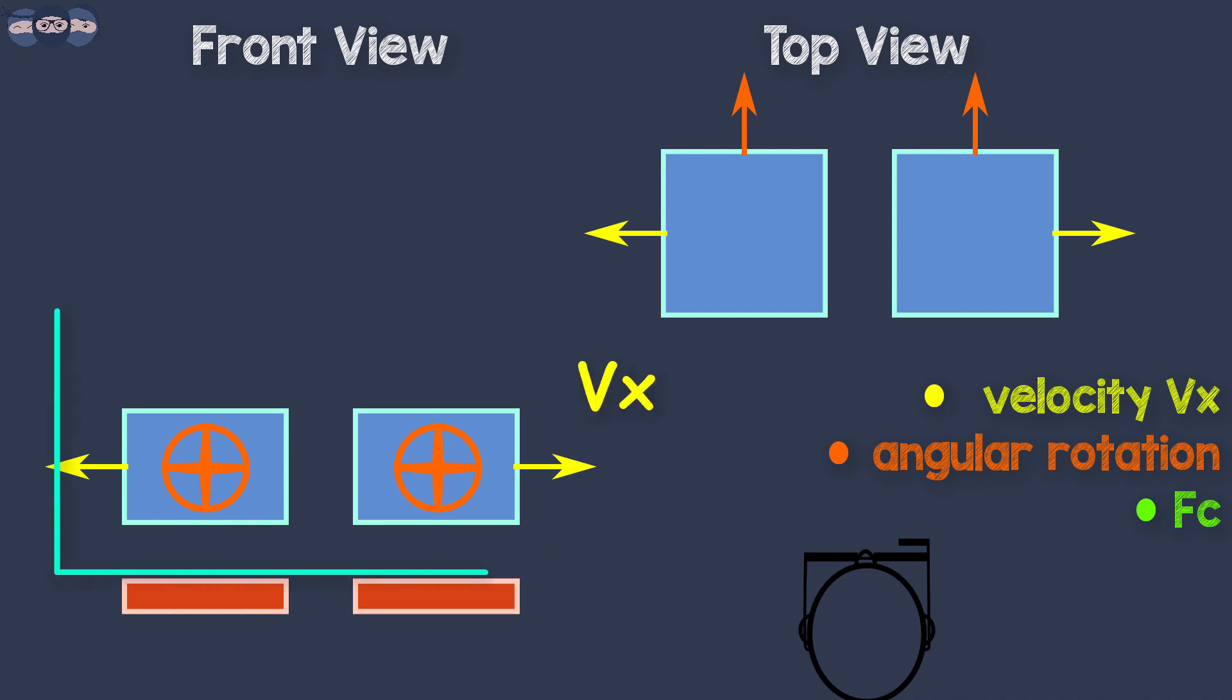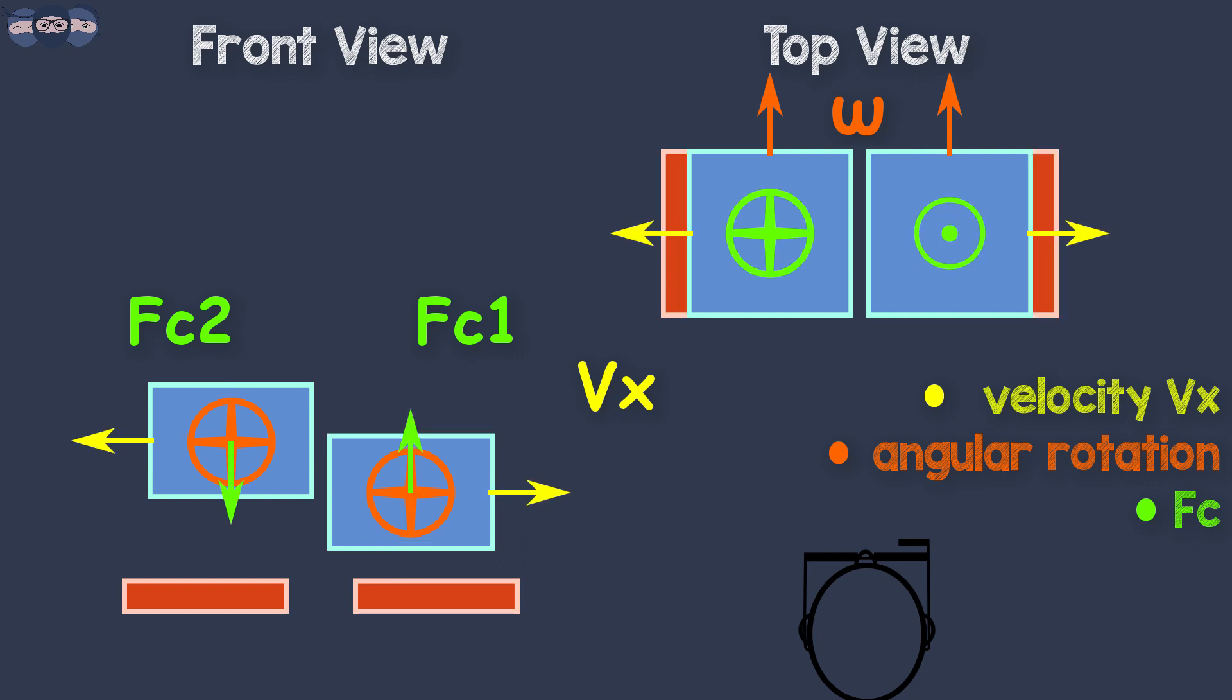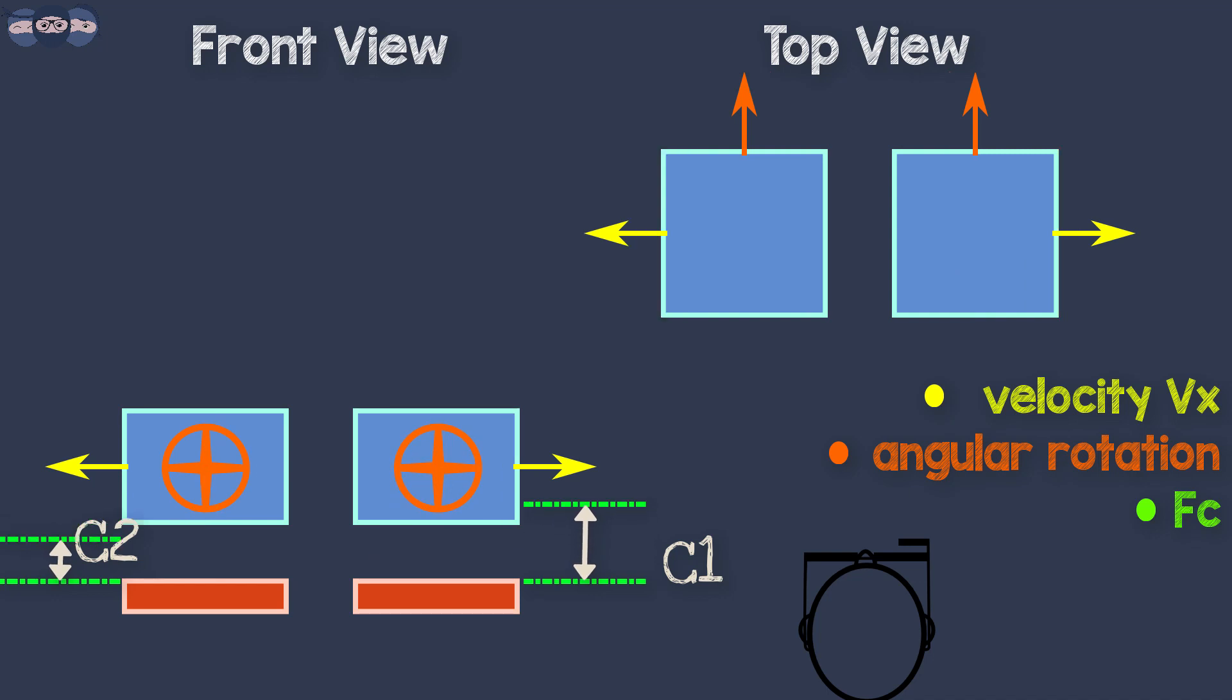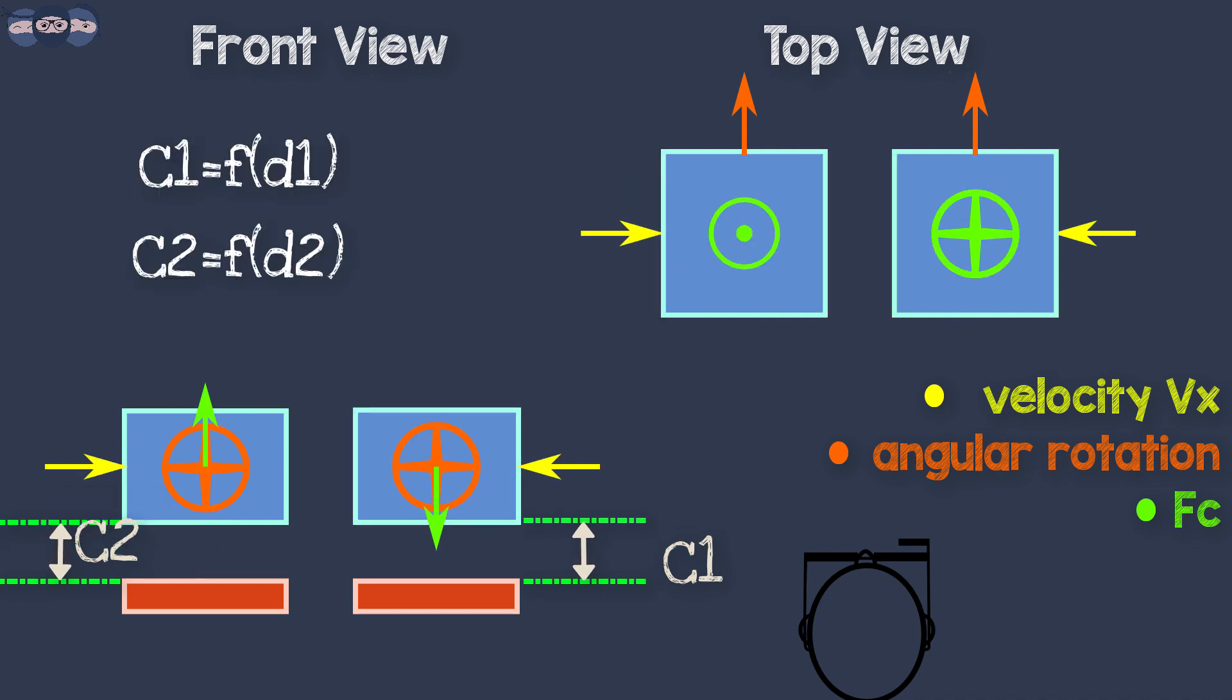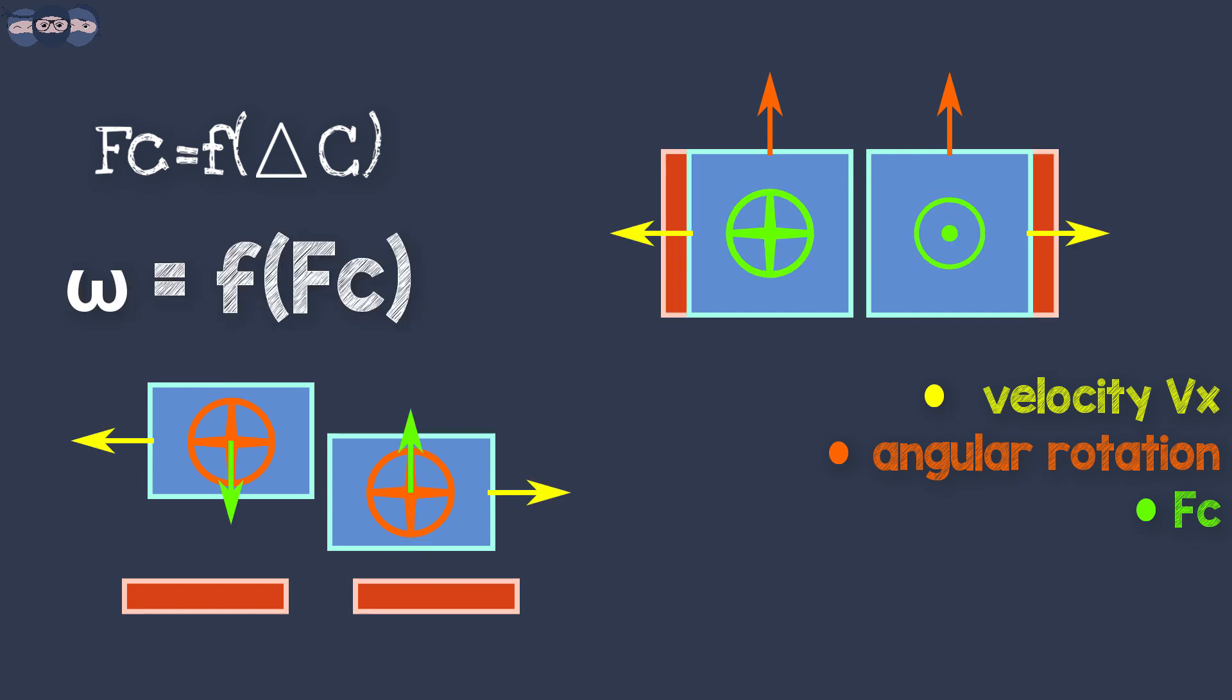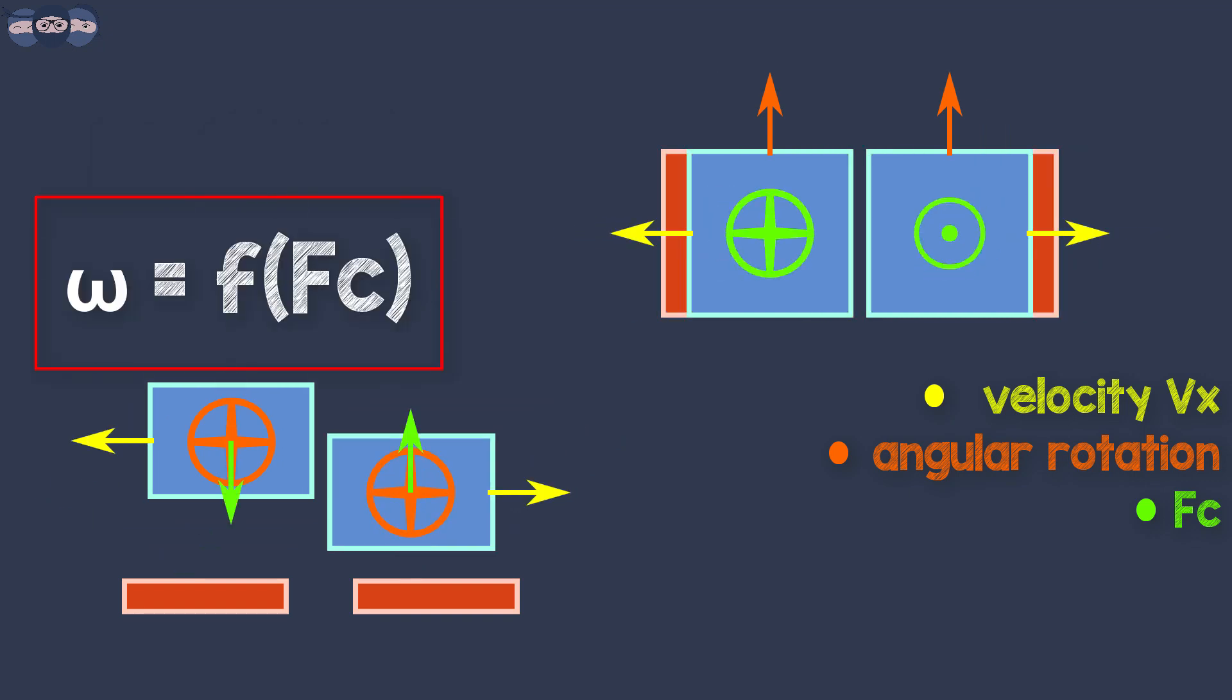As seen in the animation, we can see two blocks of mass m moving continuously in opposite directions. When they experience angular rotation, Coriolis force acts on these blocks and they move in upward or downward direction. As a result, the capacitance across the plate changes as the distance d changes. By measuring delta d, we can calculate the magnitude of Coriolis force and thereby calculate the angular rotation from the relationship discussed previously.